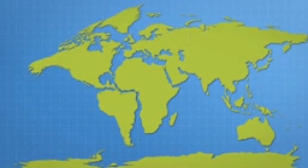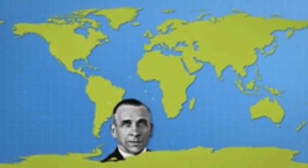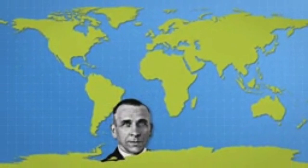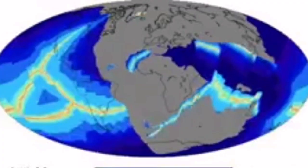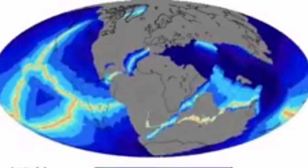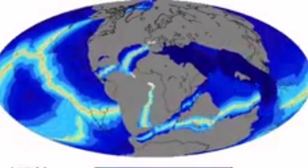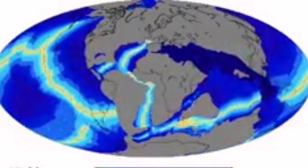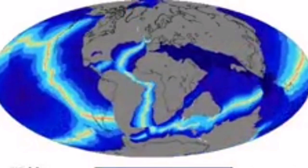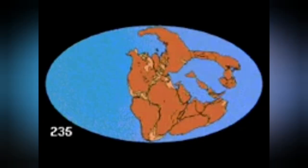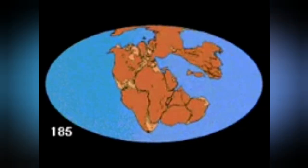We first discovered that certain coastal areas of the world — for example Africa and South America — match together as if they had been joined together in the past. Alfred Wegener discovered this first.